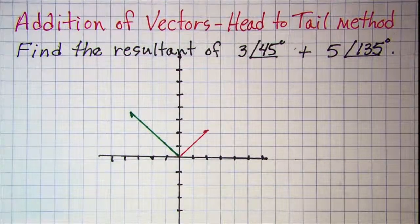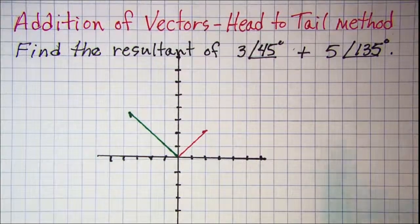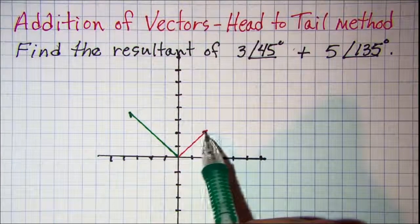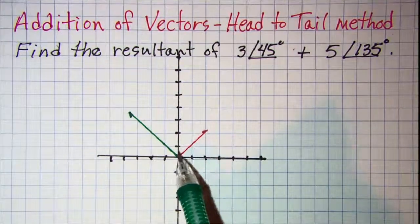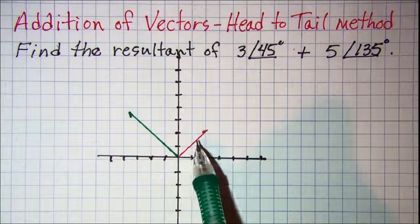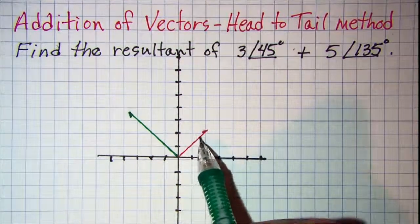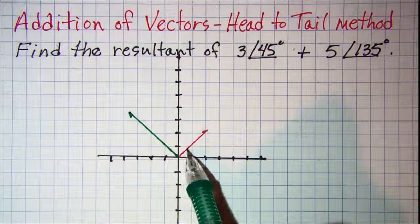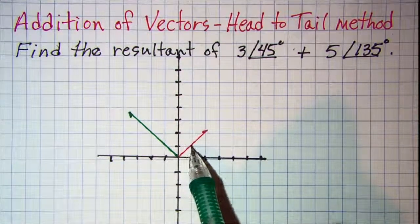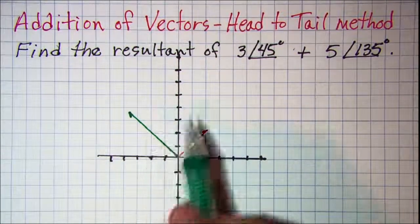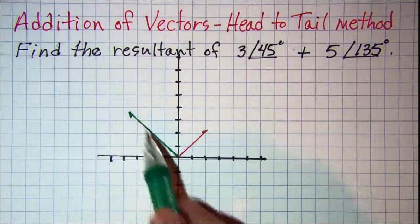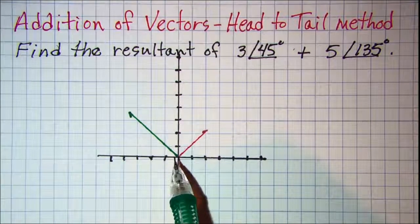Now when you talk about addition of vectors using the head to tail method, the head of the vector is this arrow part right here, and the tail of the red vector is where it begins. For a vector the only two things that really matter is the magnitude, or how long it is, or the amount of force that it represents, and the direction that it's going. So we could move these vectors anywhere on this coordinate plane as long as the magnitude or the length of the vector is the same and the direction is the same.